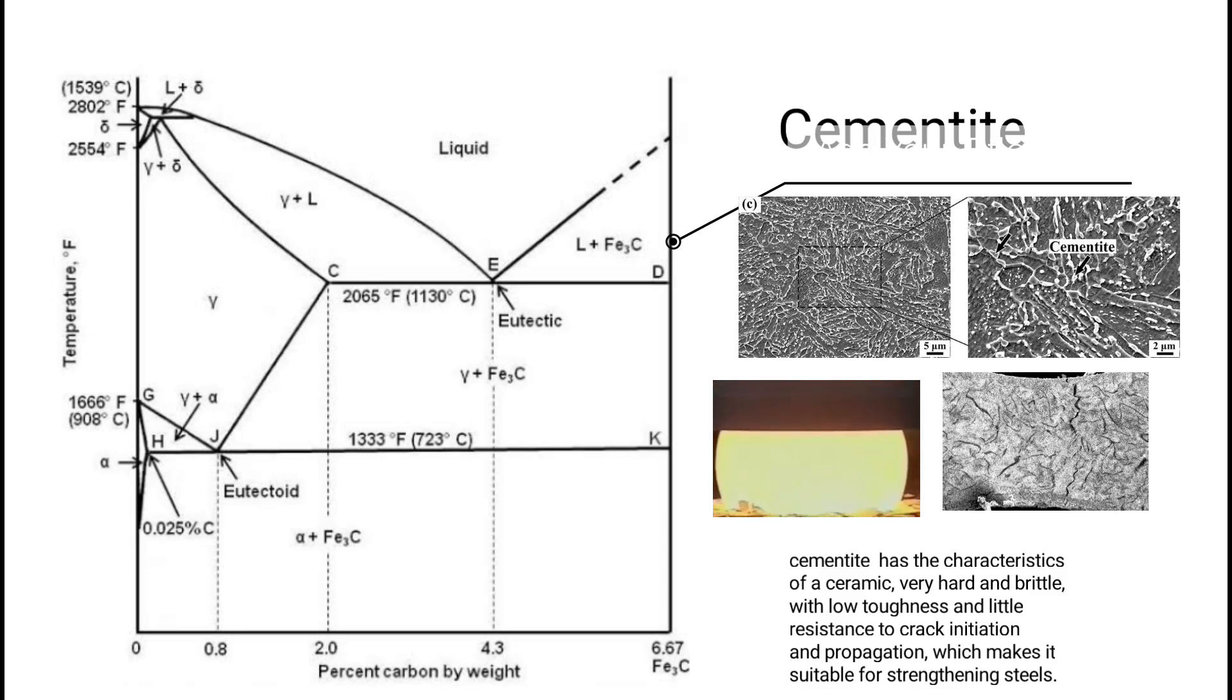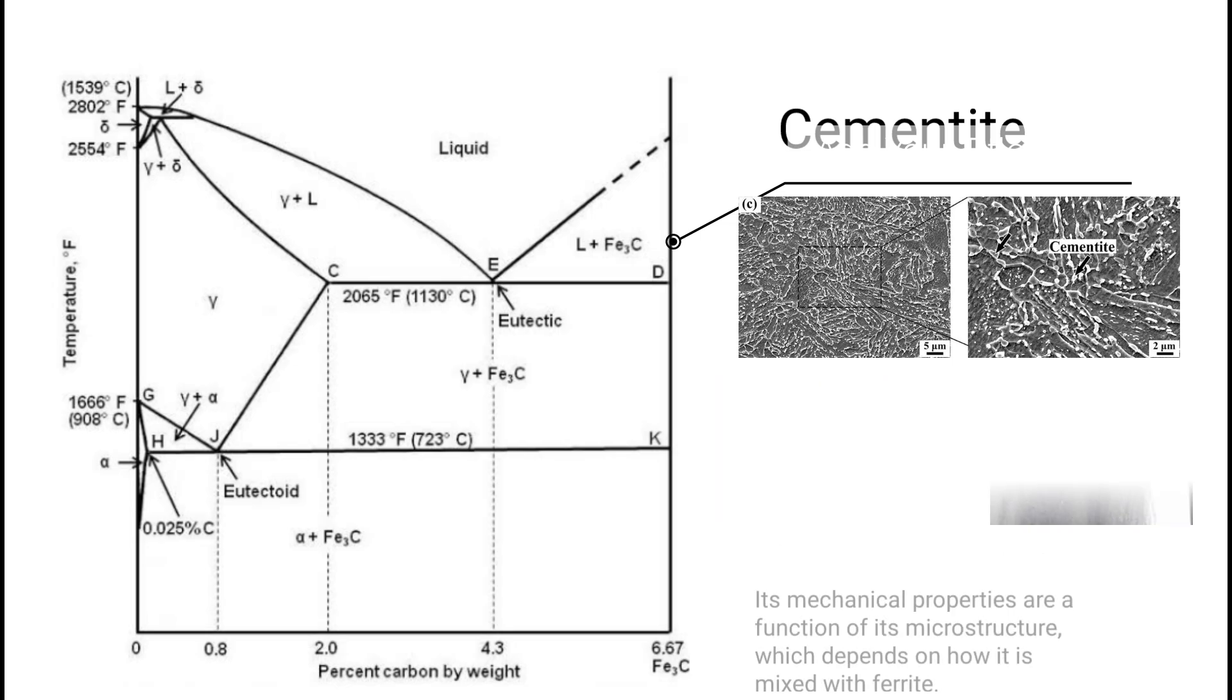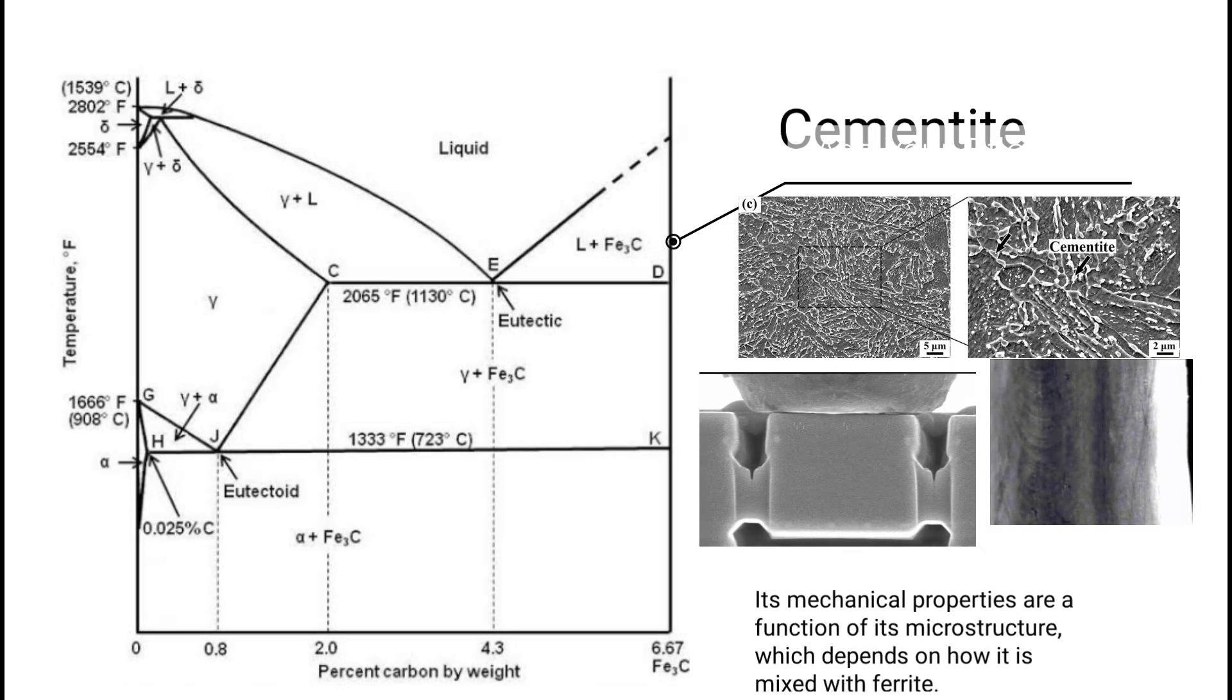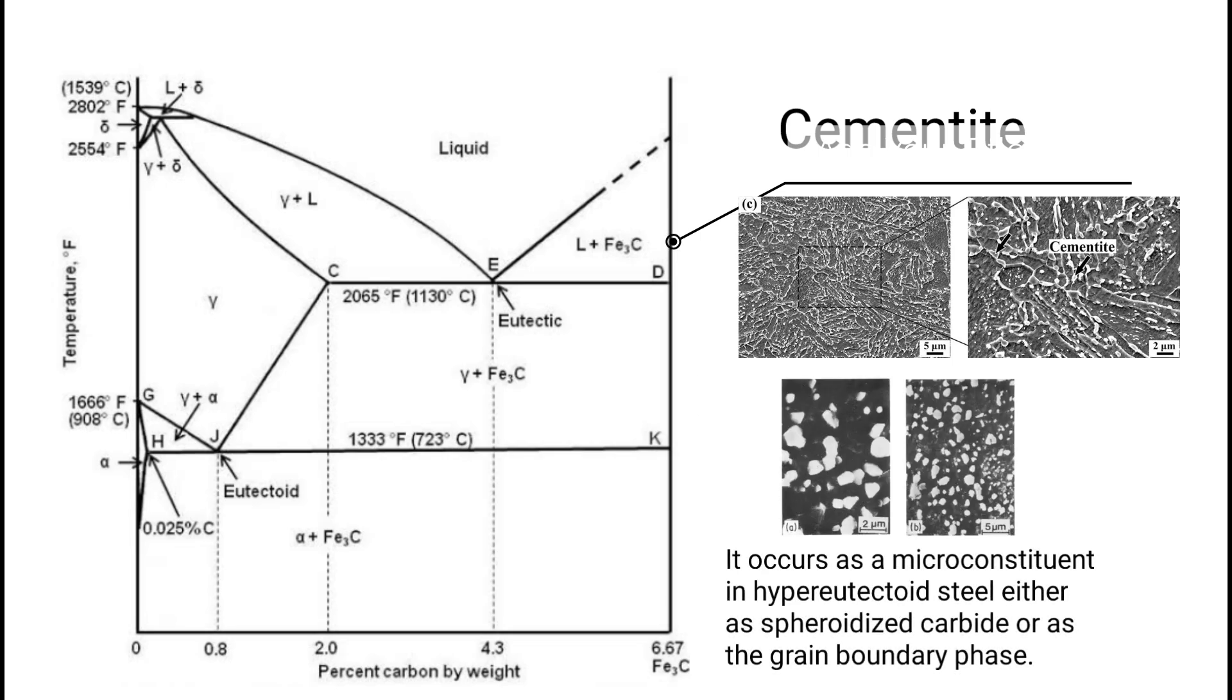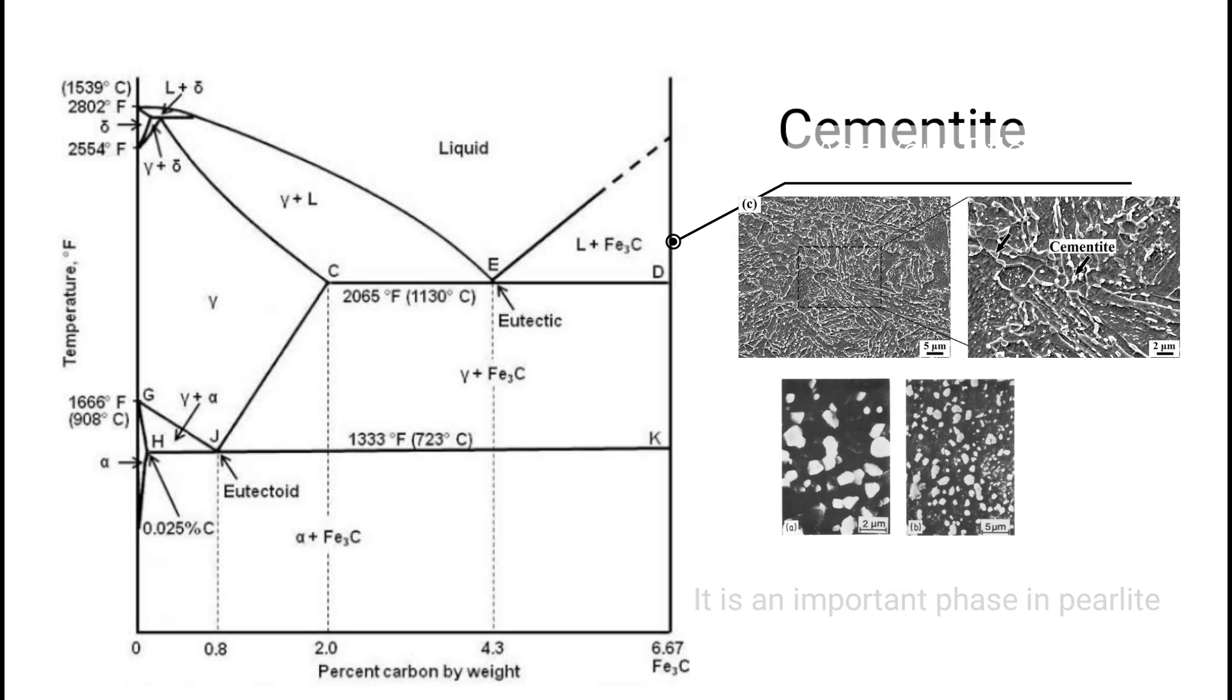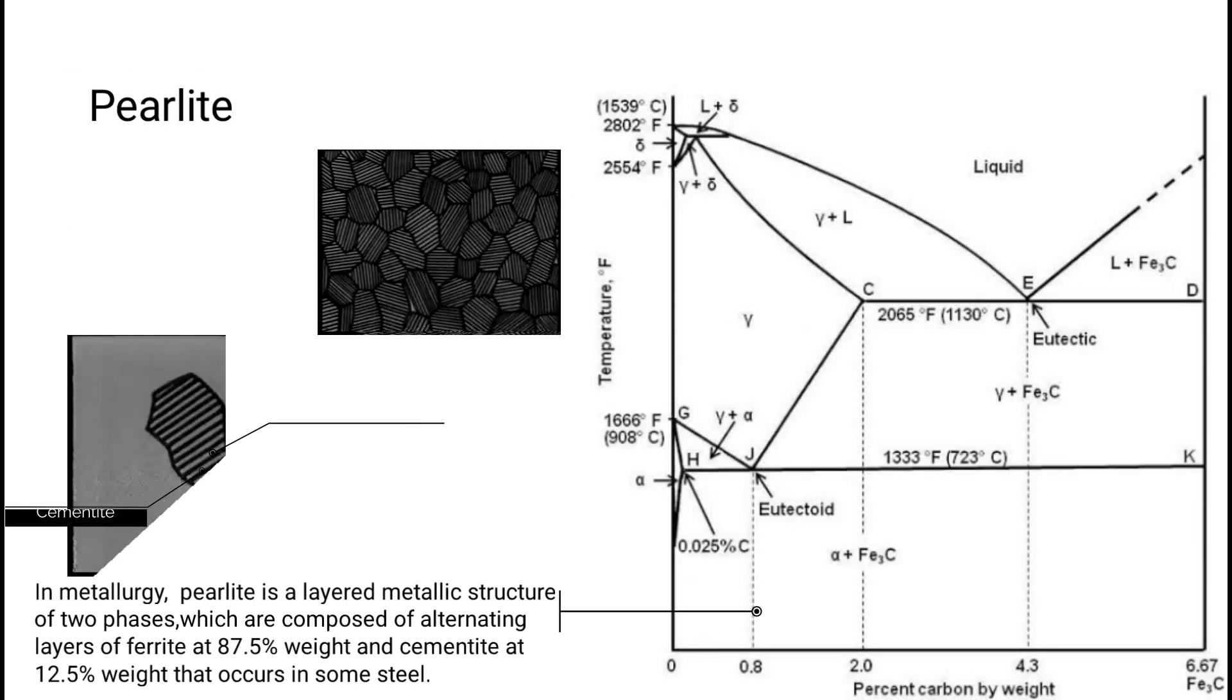Cementite has the characteristics of a ceramic: very hard and brittle with low toughness and little resistance to crack initiation and propagation, which makes it suitable for strengthening steels. Its mechanical properties are a function of its microstructure, which depends upon how it is mixed with ferrite. It occurs as a micro constituent in hypoeutectoid steel either as spheroidized carbide or as the grain boundary phase. It is an important phase in perlite.